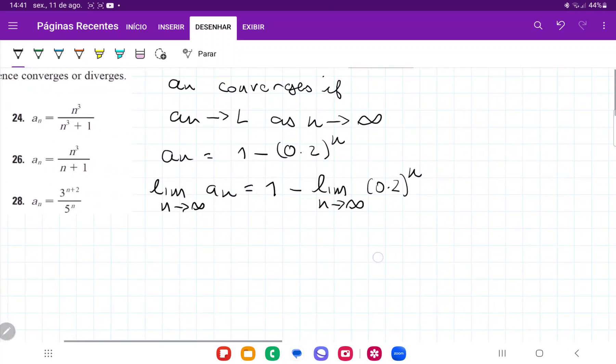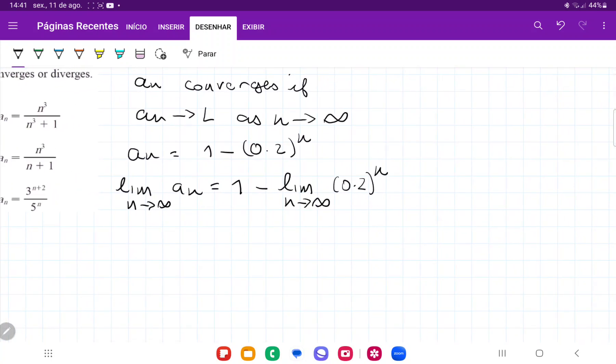And now 0.2 to the power of n, this is a geometric sequence, right? Where a geometric sequence is described by some ratio to the power of n. And now we can see here that the ratio is equal to 0.2, right? And 0.2 is definitely less than 1 and is bigger than negative 1.